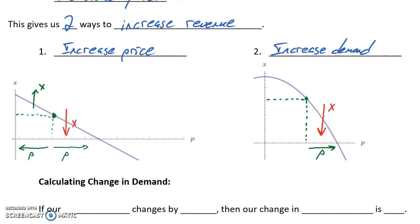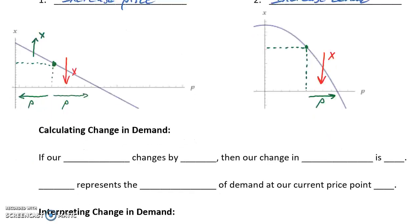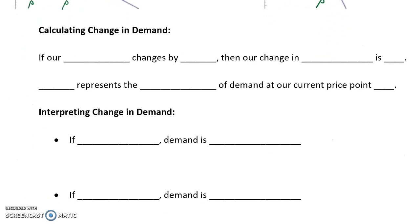What we want to do is identify how much we can change our price, or more specifically, if we do change our price, what impact that would have on demand. If our price for a certain item changes by C% (C for change), then our change in demand is calculated as E(p) times C%.